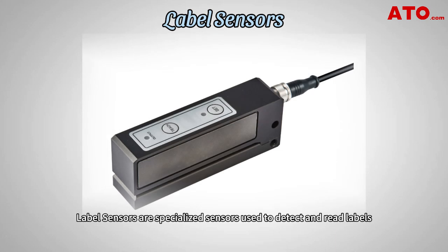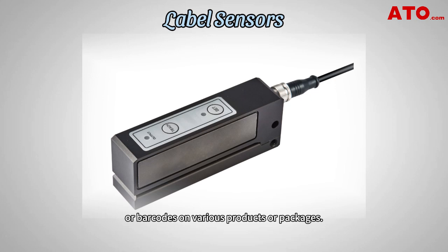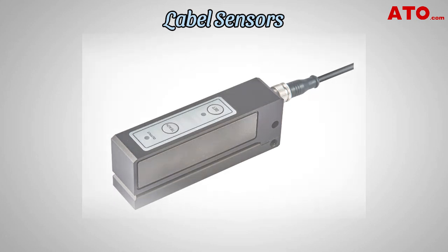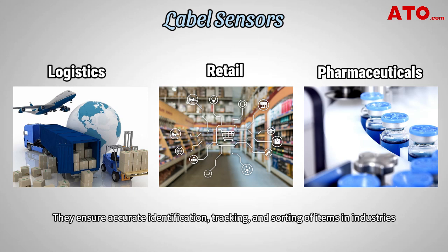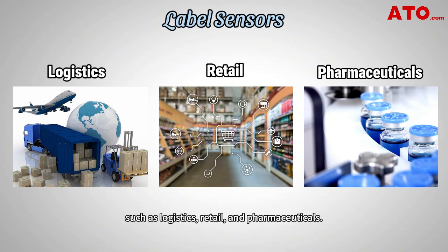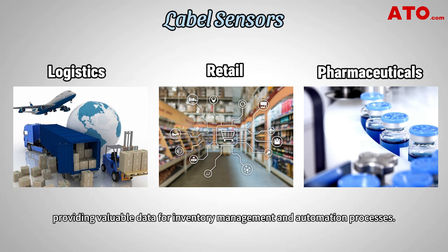Label sensors are specialized sensors used to detect and read labels or barcodes on various products or packages. They ensure accurate identification, checking and sorting of items in industries such as logistics, retail and pharmaceuticals. Label sensors can quickly scan labels or barcodes, providing valuable data for inventory management and automation processes.